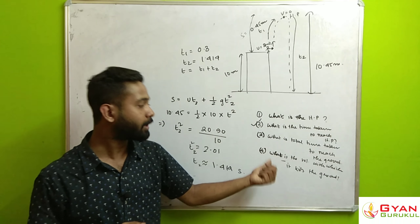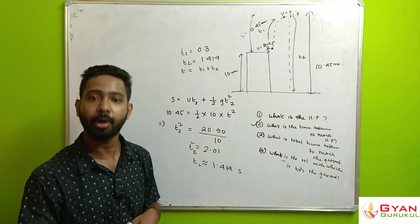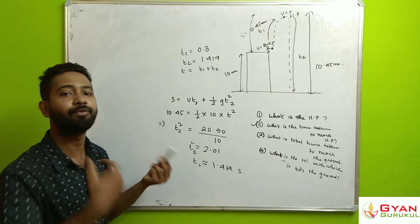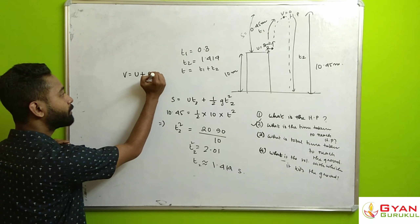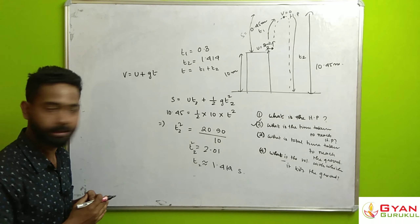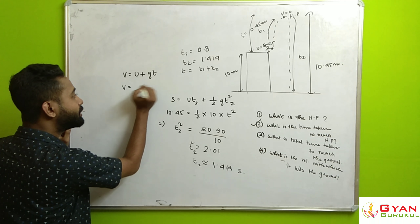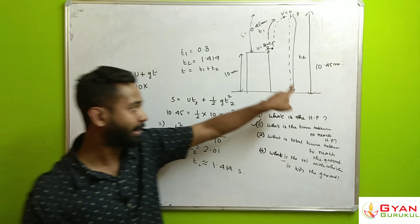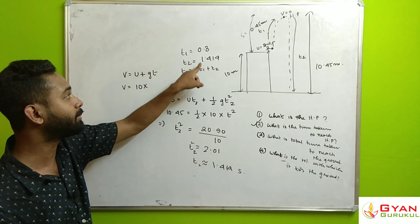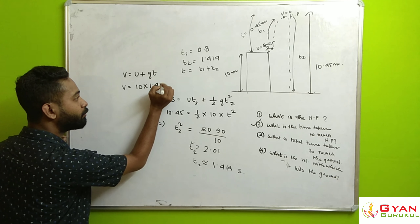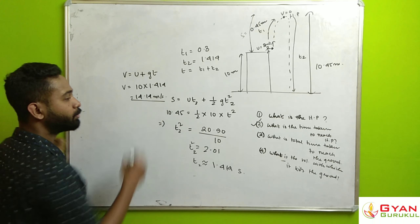For the last question — what is the velocity with which the ball hits the ground — we use V = U + Gt for the downward motion. Since the initial velocity for the downward motion is 0, V = Gt2 = 10 × 1.414 = 14.14 meters per second. This is the final velocity with which the ball hits the ground. Thank you.